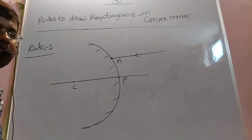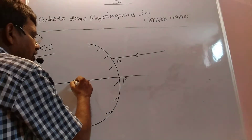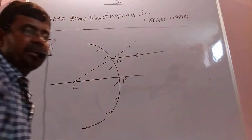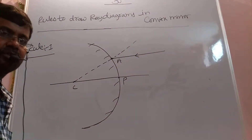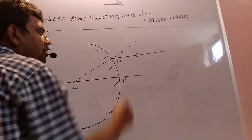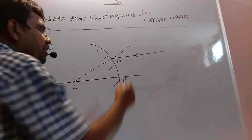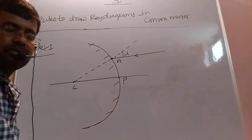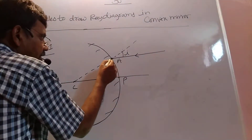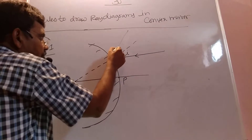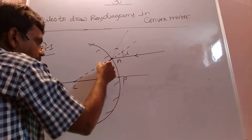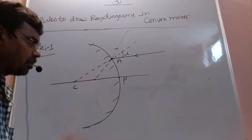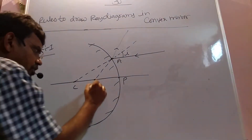Now I am joining point A to the center of curvature, so this is my normal. The angle between the normal and the incident ray is called the angle of incidence. Angle of incidence equals angle of reflection, so this is my reflected ray. Taking the extension of the reflected ray, where it intersects on the principal axis — that point is called the focal point.